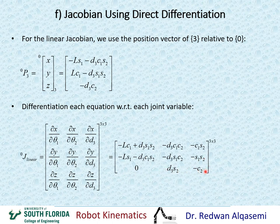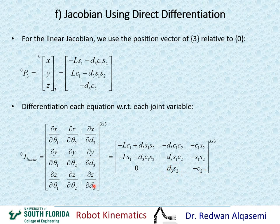For the third row, differentiating z with respect to theta 1: there is no theta 1 in the z equation, so the result is 0. Differentiating z with respect to theta 2: cosine theta 2 differentiates to negative sine theta 2, giving positive D3 sine theta 2. Differentiating z with respect to D3: the result is negative C2. This completes the 3x3 linear Jacobian in reference to frame 0.